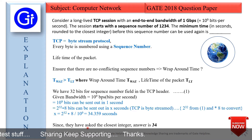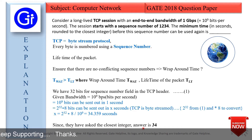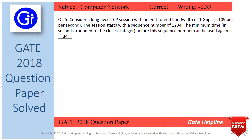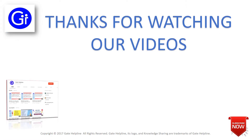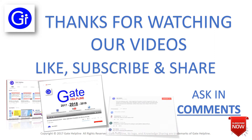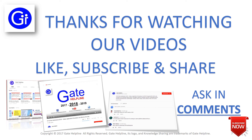Since they asked for the closest integer, the answer is 34. So the minimum time in seconds, rounded to the closest integer, before the sequence number can be used again is 34 seconds. Thanks for watching. Please like, subscribe, and share our videos. If you have any doubt or question, please comment below.